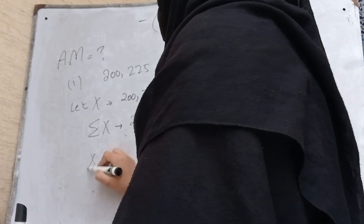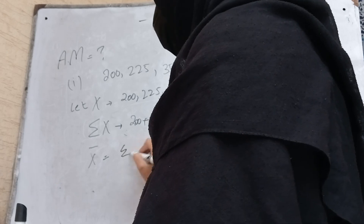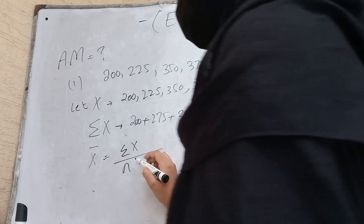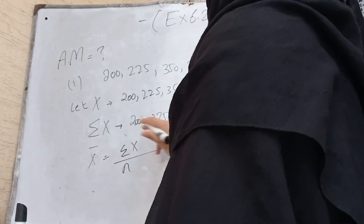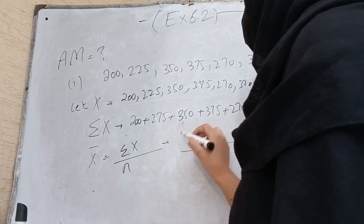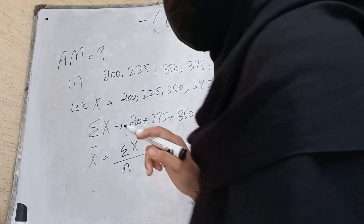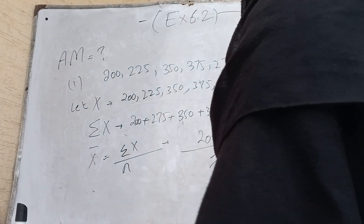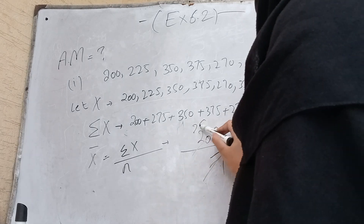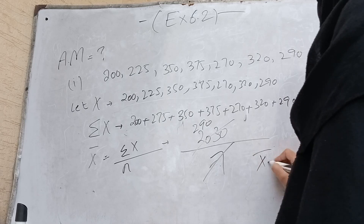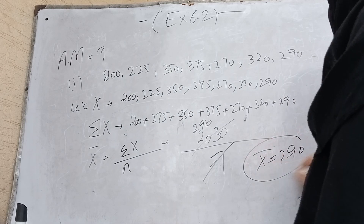We know that arithmetic mean equals the sum of data divided by the total number of values, which is 1, 2, 3, 4, 5, 6, 7 — so divided by 7. The total sum of data is equal to 2030, divided by 7, which is equal to 290. So the required answer for the mean is 290.